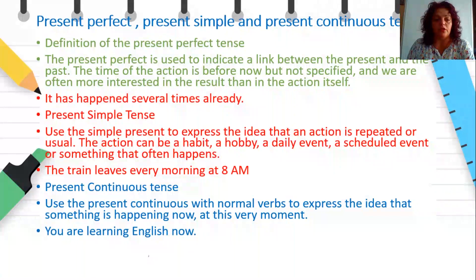What's the definition of the Present Perfect Tense? The Present Perfect is used to indicate a link between the present and the past. The time of the action is before now, but not specified, and we are often more interested in the result than in the action itself. It has happened several times already, which means started in the past up to the present.